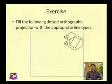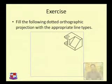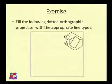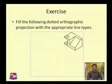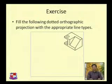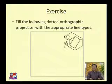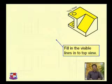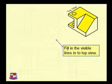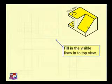Now this is an exercise: fill the following dotted orthographic projections with the appropriate line type. Think about this object and how to draw its views. We can use any concept discussed earlier — either the glass box theory, or the operator moving around its three faces (front view, top view, and side view), or the object moved towards the viewer.